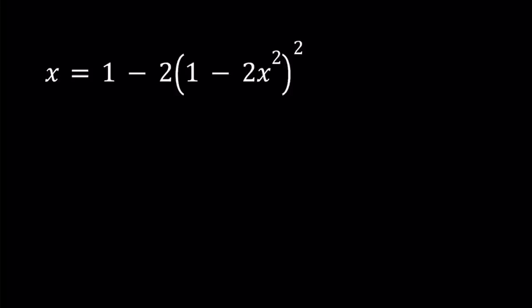Hello everyone. In this video, we're going to be solving a polynomial equation. We have x equals 1 minus 2 times the quantity 1 minus 2x squared, squared. I'll be presenting two methods, and let's start with the first method.